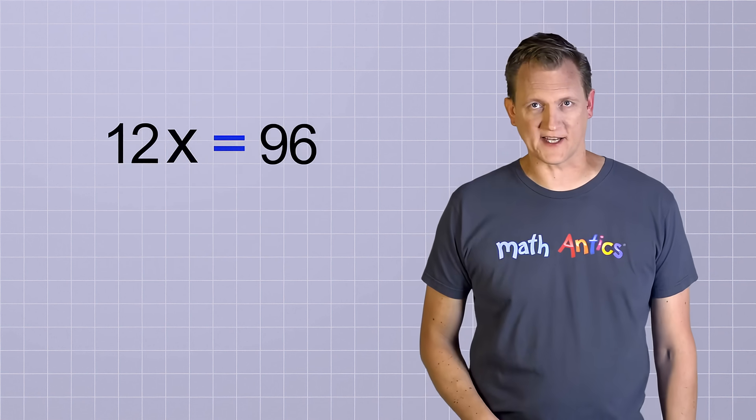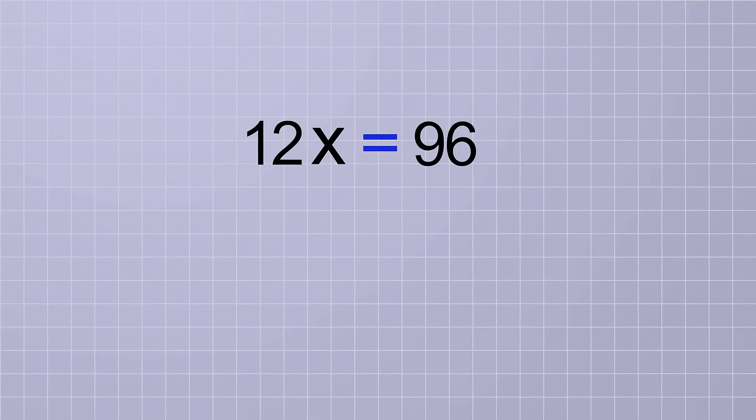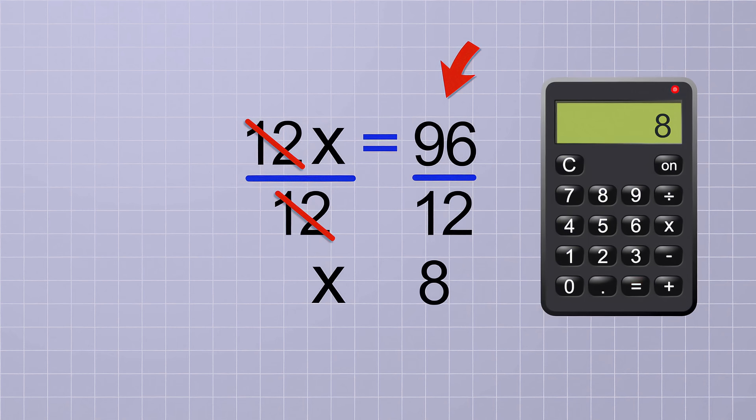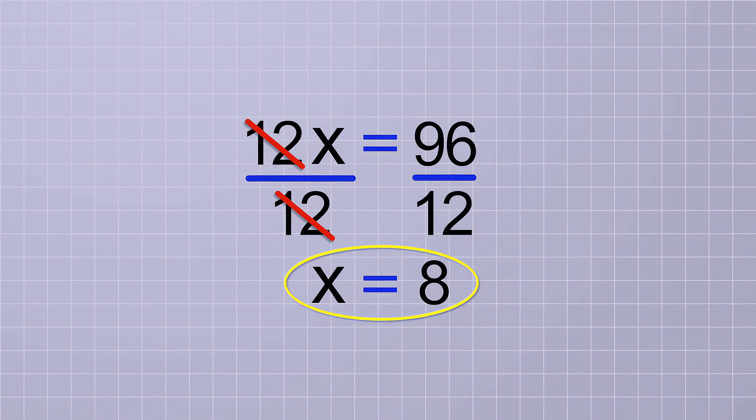Let's try another one just like that: 12x equals 96. In this problem, the unknown is being multiplied by 12. So to get the x all by itself, we're going to need to divide both sides of the equation by 12. On the first side, the 12 on top and the 12 on bottom cancel out, leaving just x on that side. And on the other side, we need to divide 96 by 12. You might be able to do that by memory, but if not, you can use a calculator to divide. 96 divided by 12 is 8. So in this problem, x equals 8.